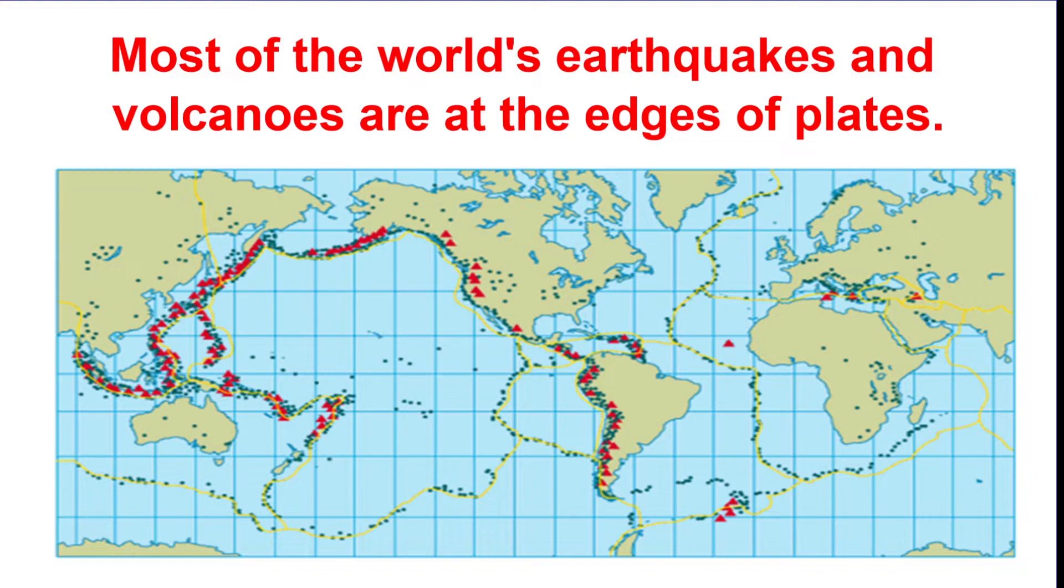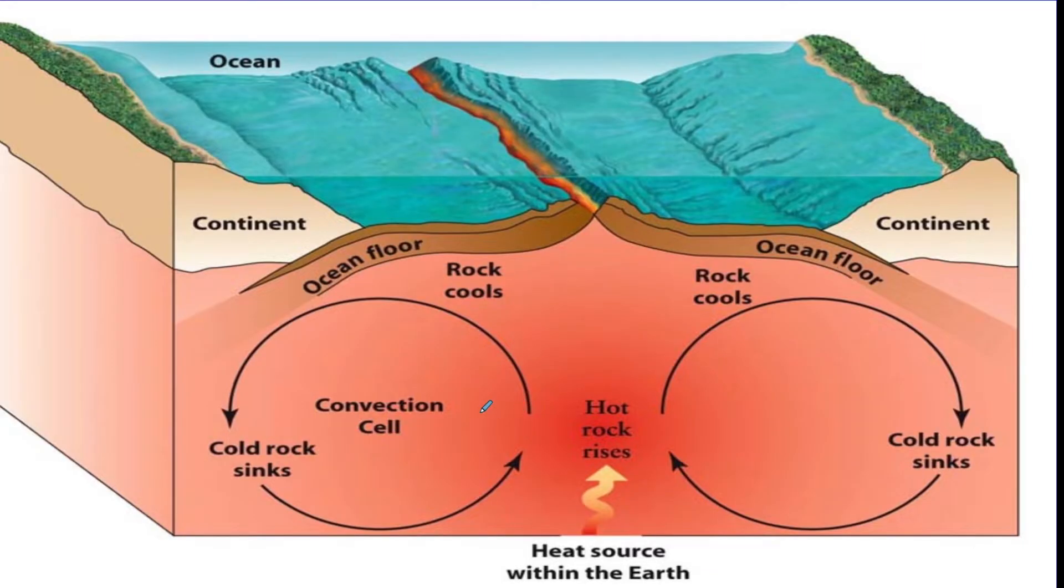So we know the continents are currently in motion. Now, on these plate boundaries is where you're going to get most of your volcanoes and earthquakes. Now, this chart shows actually a lot of information. This bottom layer, this red area, this is called the asthenosphere. And we're going to talk about that more in a couple minutes.